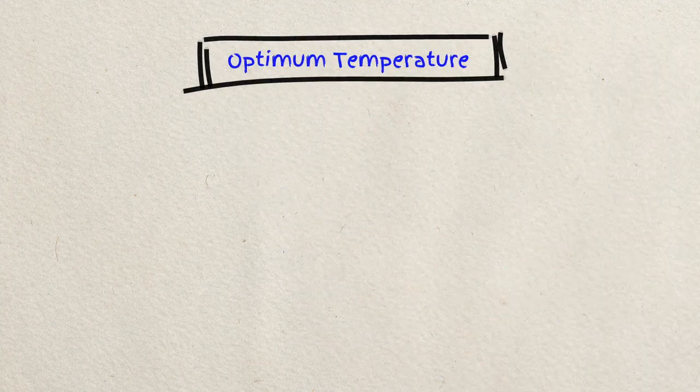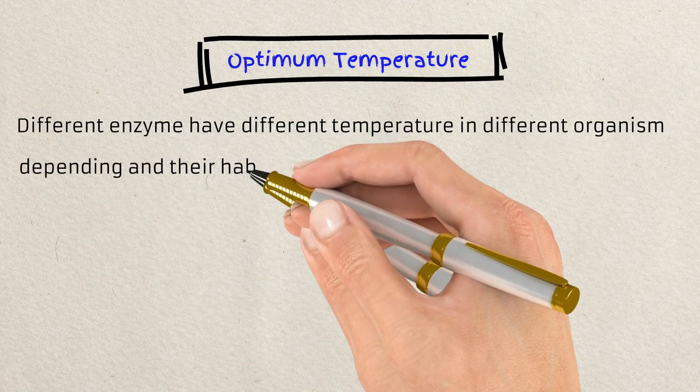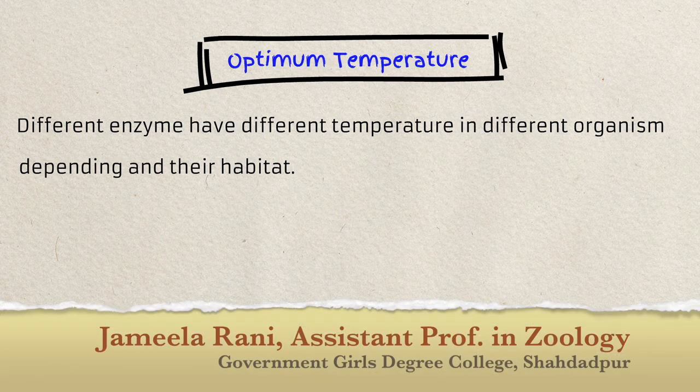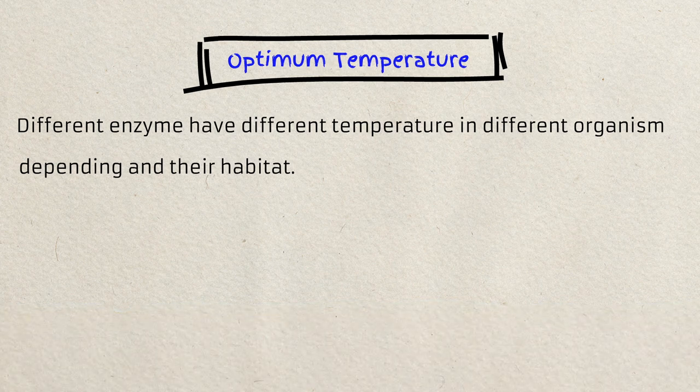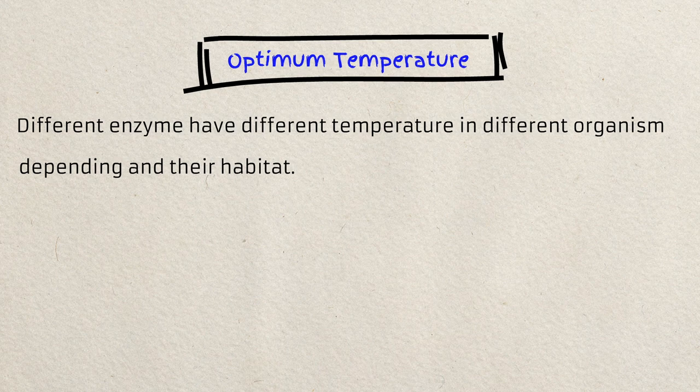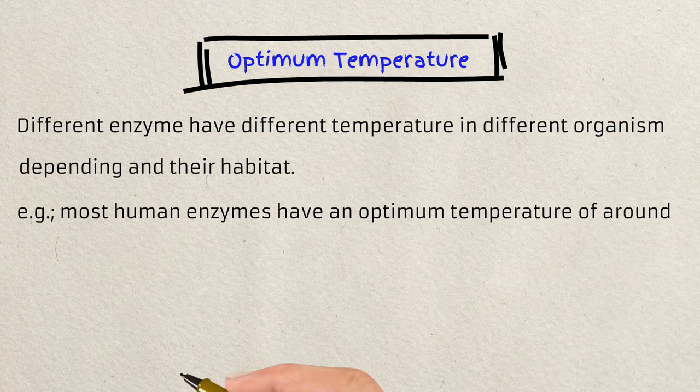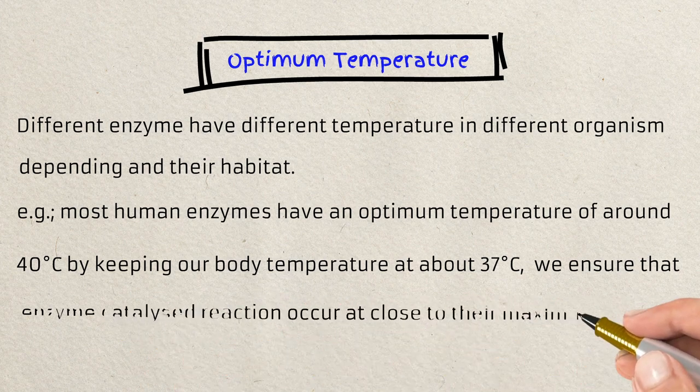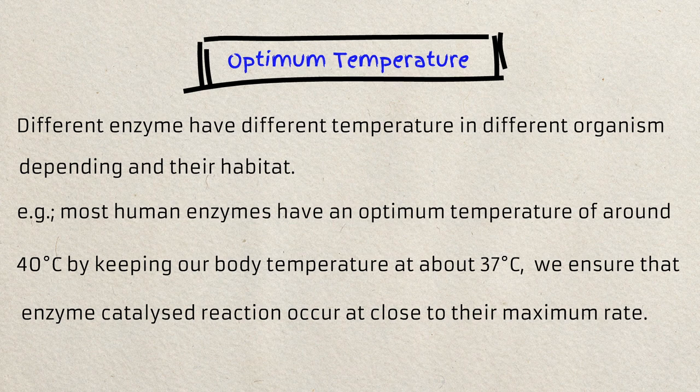Optimum temperature. The word optimum means suitable temperature. Different organisms have different habitat. Habitat means dwelling place. Different enzymes have different optimum temperature depending on their habitat. For example, most human enzymes have an optimum temperature of around 40 degrees centigrade. By keeping our body temperature at about 37 degrees centigrade, we ensure that enzyme-catalyzed reactions occur at close to their maximum rate.